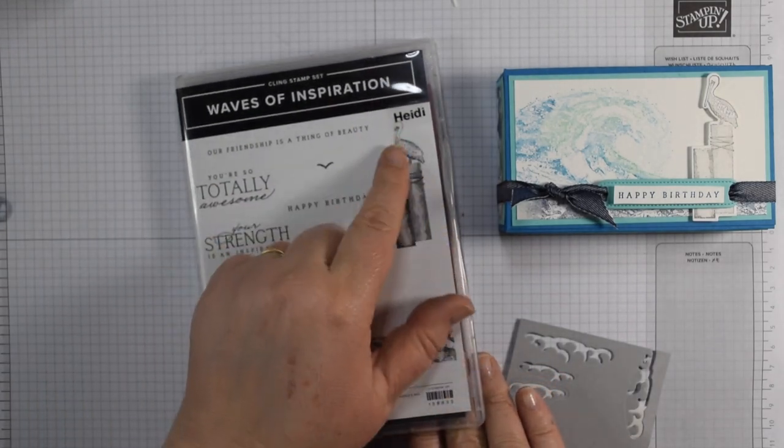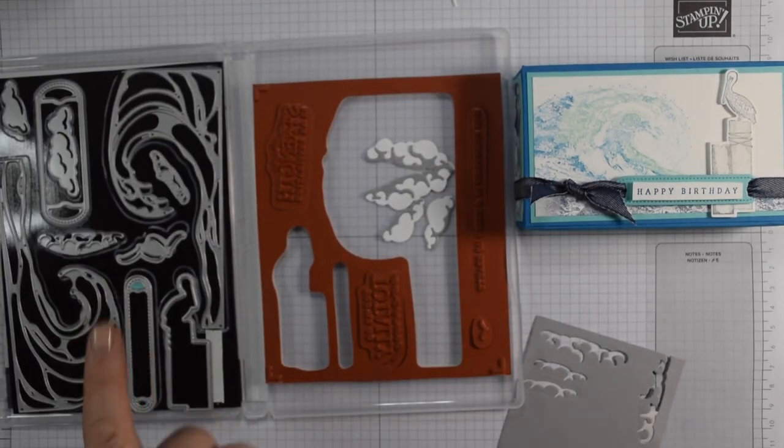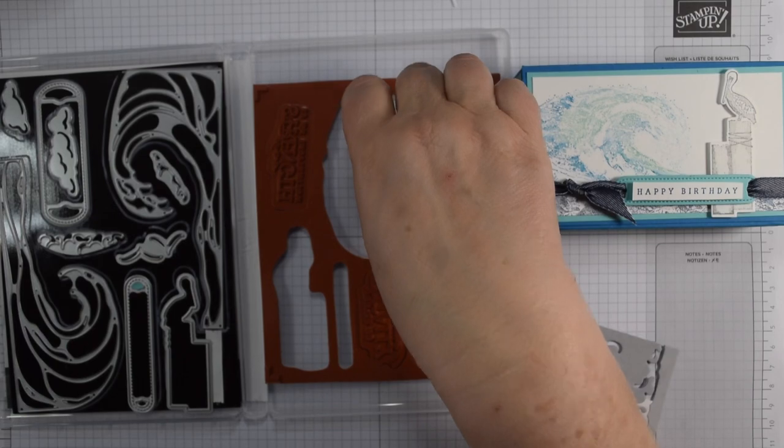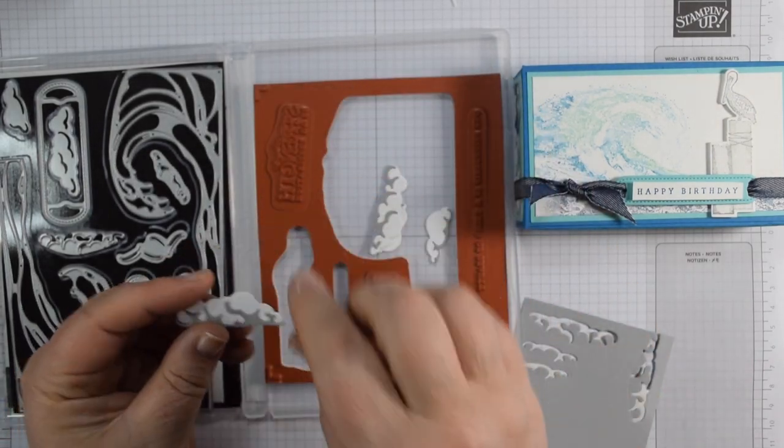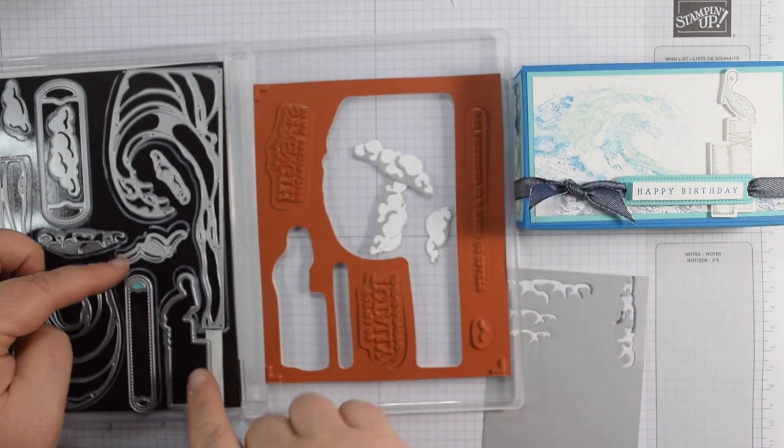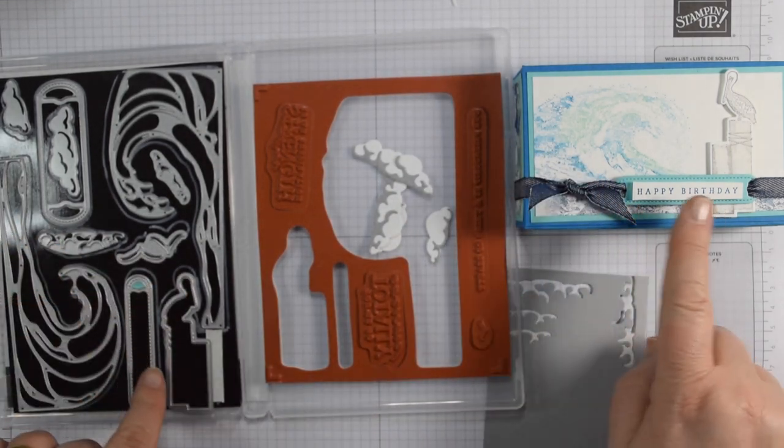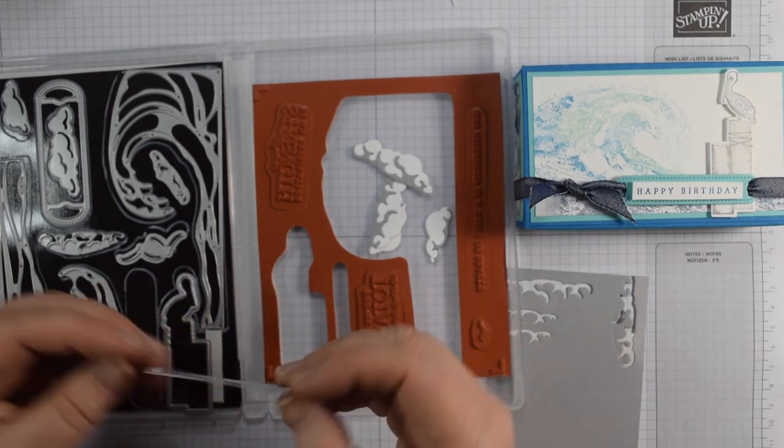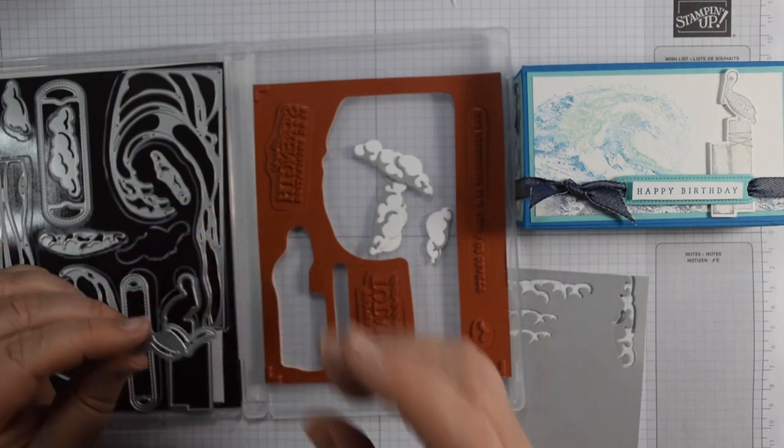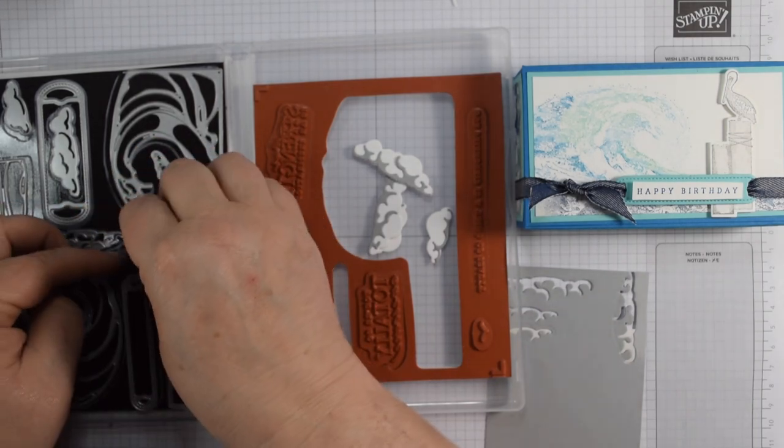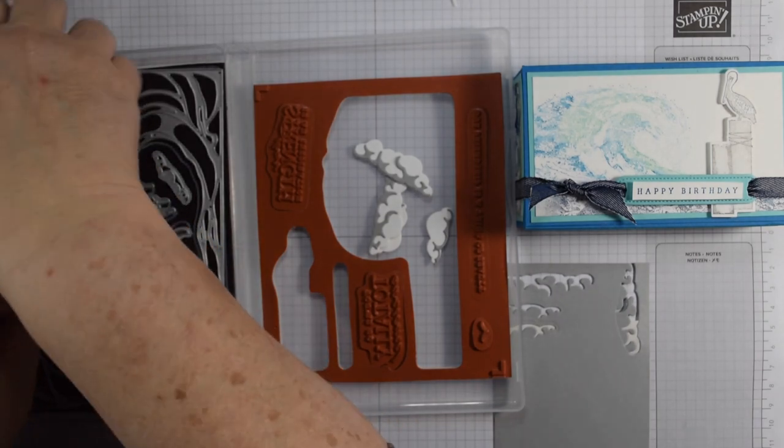So here are the stamps - beautiful wave, super sentiments, the pelican on a post. The dies don't cut out the actual wave, they are designed to layer over the top so you get a real 3D effect. We've got these clouds with accents, a die for the pelican, and this really useful slider tag type die.